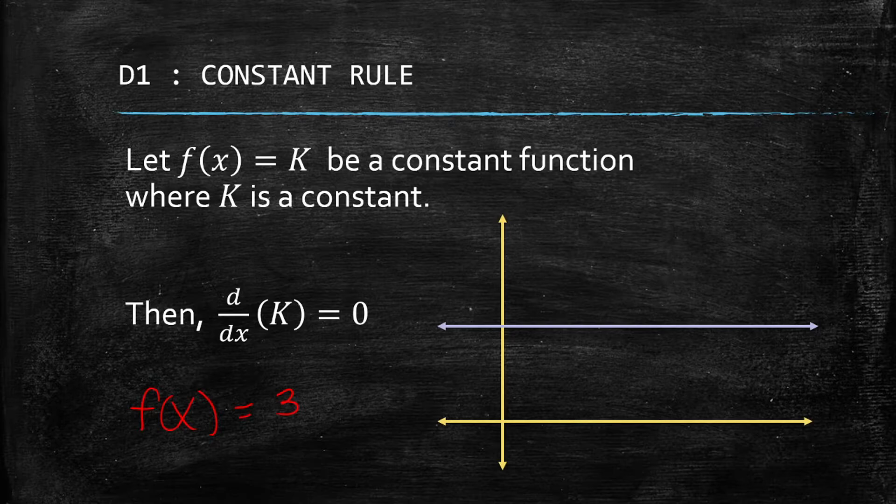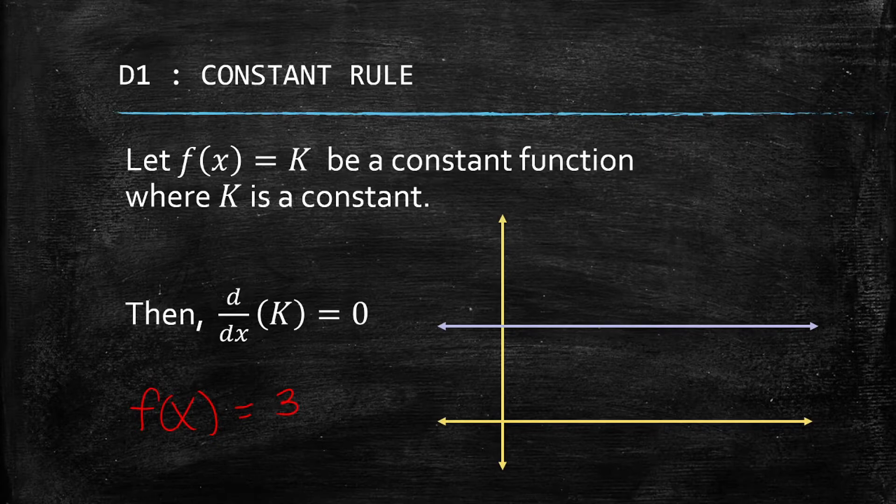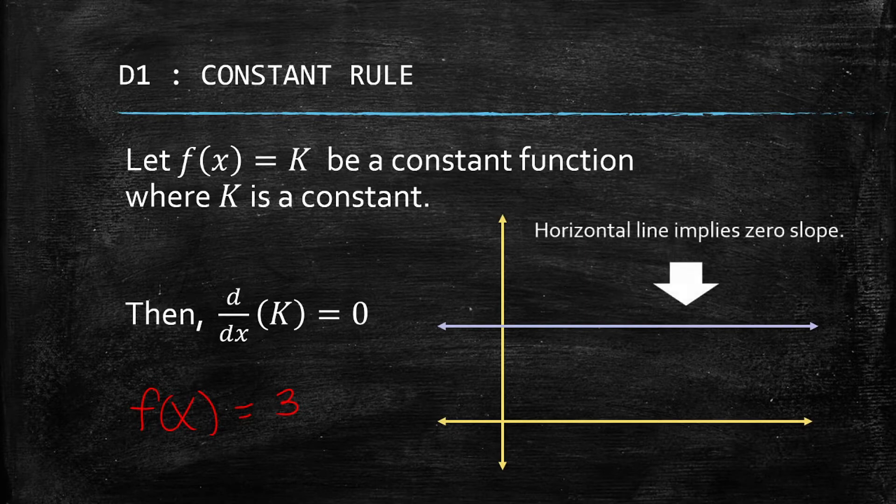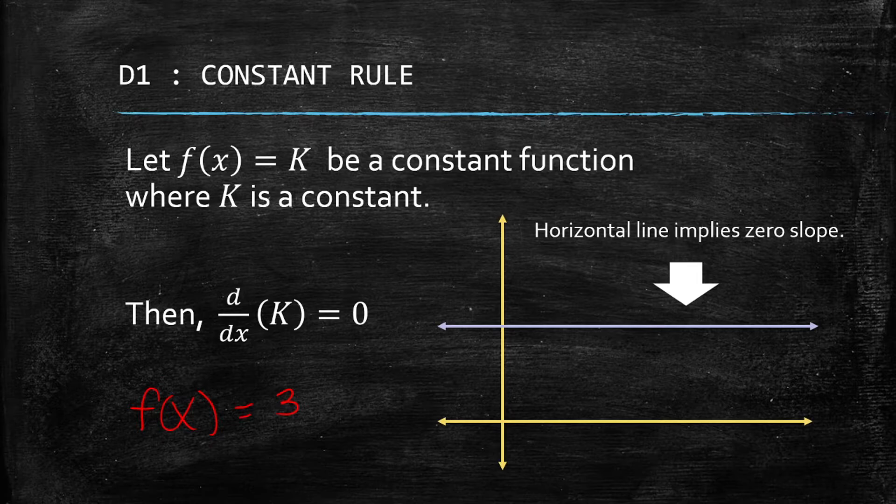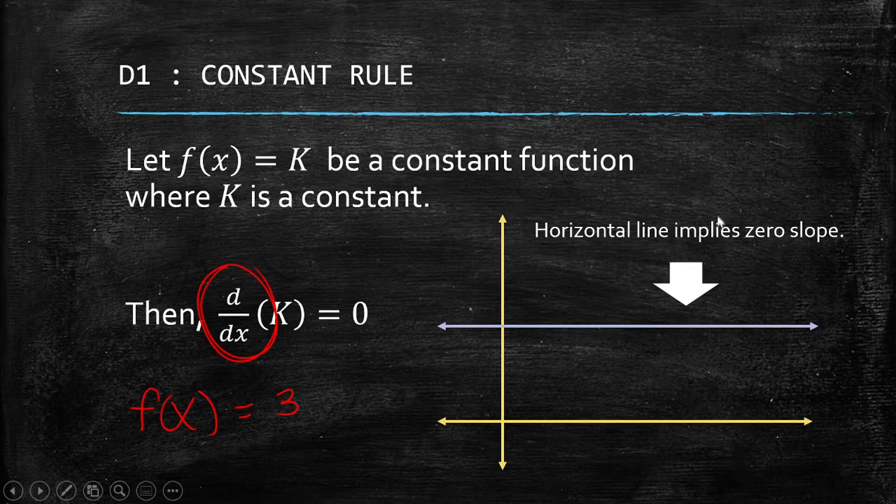Let's illustrate why it is zero. If we have a constant function, the graph of a constant function is actually a horizontal line. Horizontal lines have a slope of zero, and the derivative is actually a slope of the tangent line, which is the horizontal line itself with zero slope.